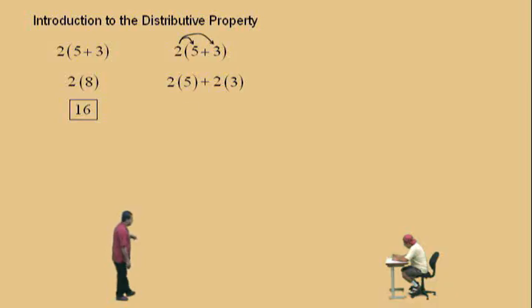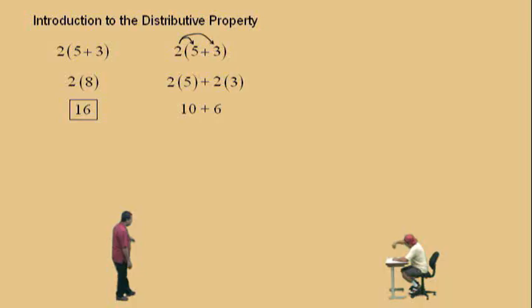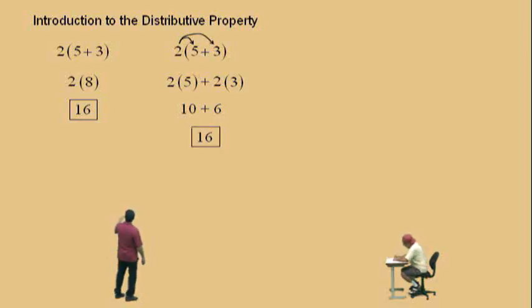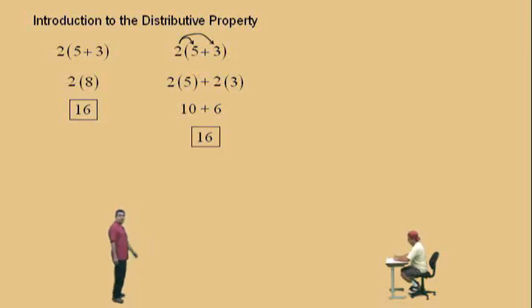Now, what's 2 times 5, Charlie? 10 — same as 5 times 2. And what's 2 times 3? 6 — same as 3 times 2. What's 10 plus 6? 16. Notice the two answers are exactly the same: 16.